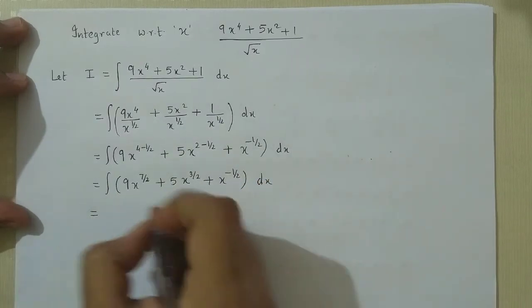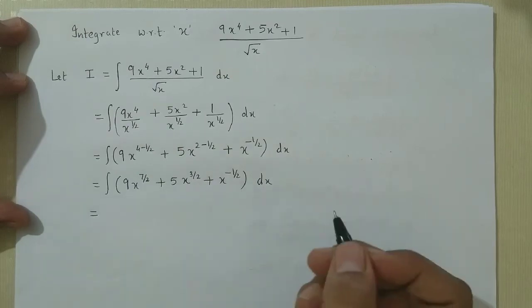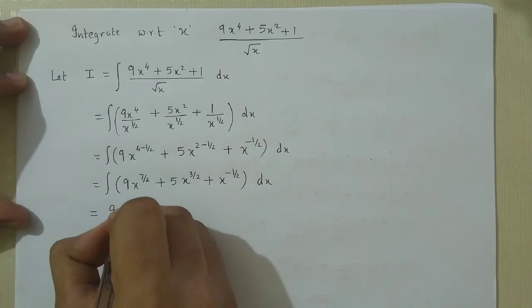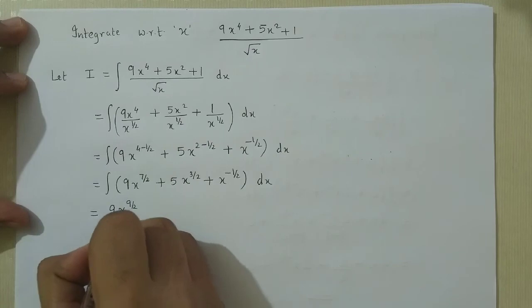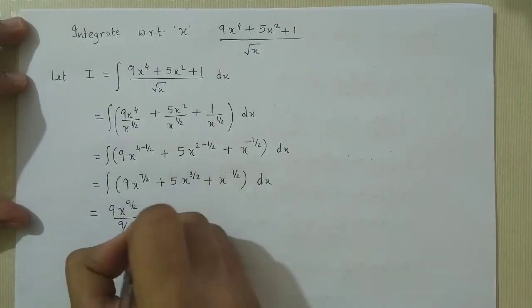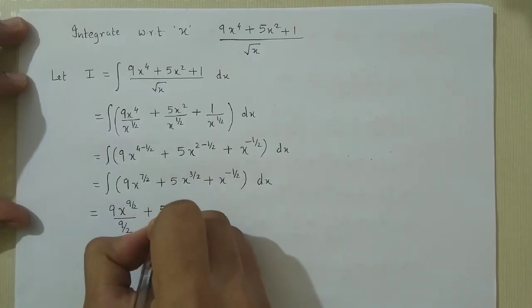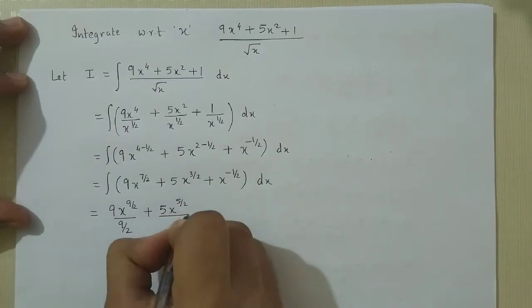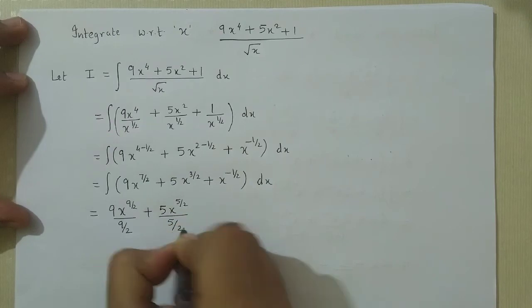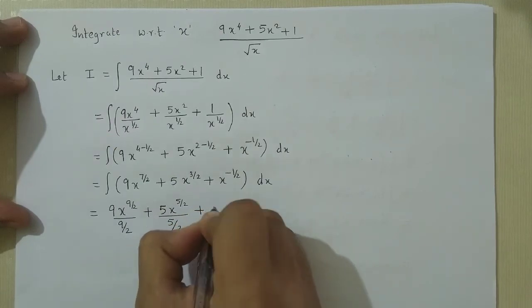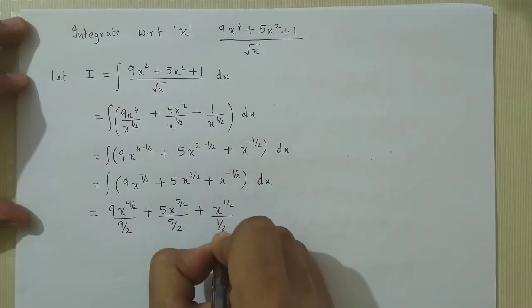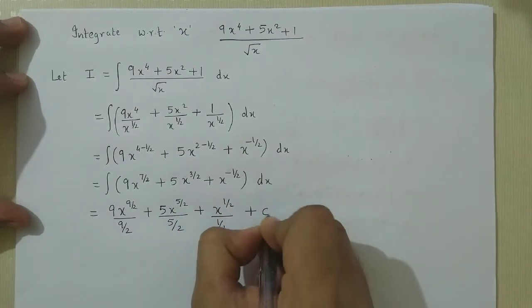Now we apply the integration formula for x raised to n to each of these terms. For 7/2 plus 1, we get 9/2, and for minus 1/2 plus 1, we get 1/2. This gives us the integrated form plus the constant c.